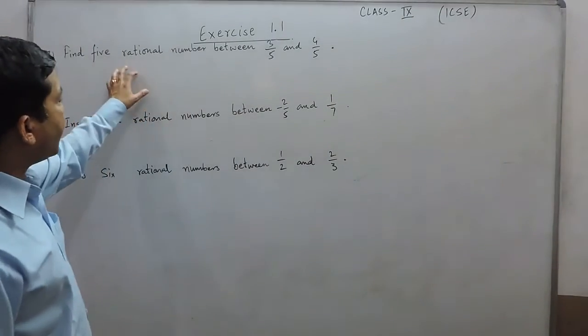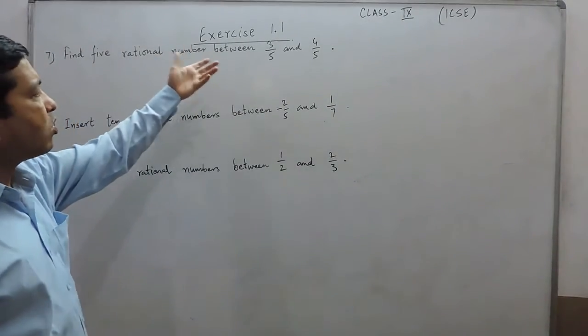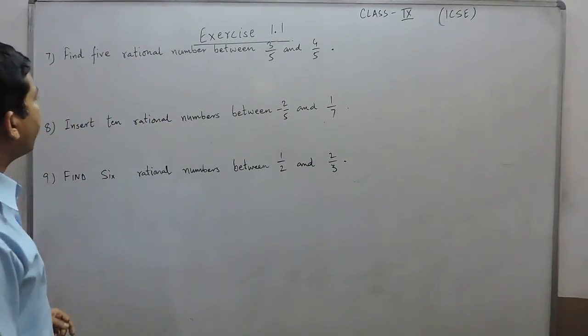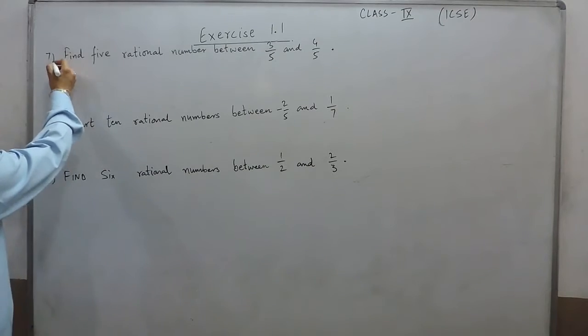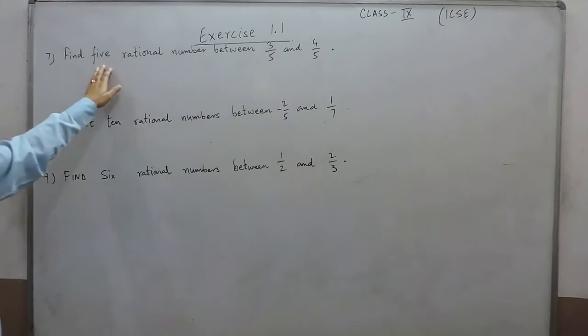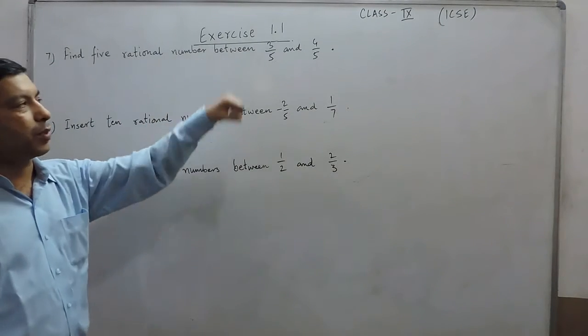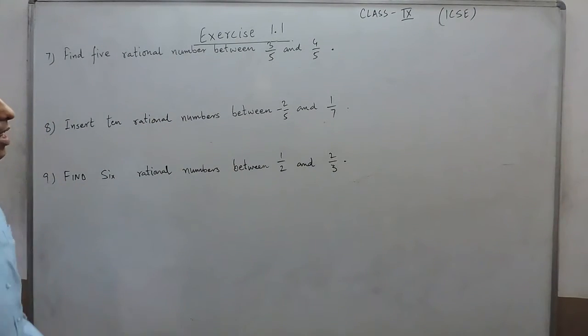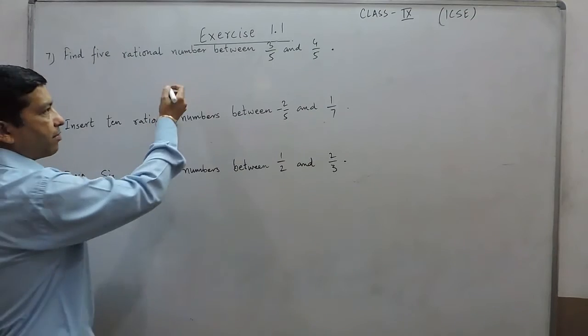Hello everyone. As we already know how to find rational numbers, here in question number 7, we have to find 5 rational numbers between 3/5 and 4/5.